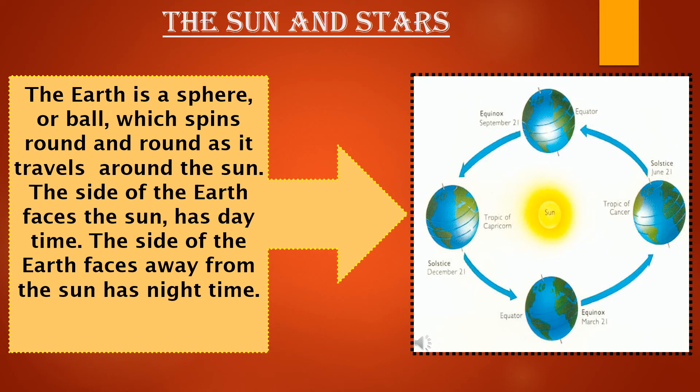From the sentences we just read, you have learned that the Sun is in the sky and we can see it during daytime because of the Earth's rotation. As you can see in this picture, the Earth is a sphere — just like a football — and it spins round and round. It is spinning around the Sun and also revolving around the Sun from west to east.